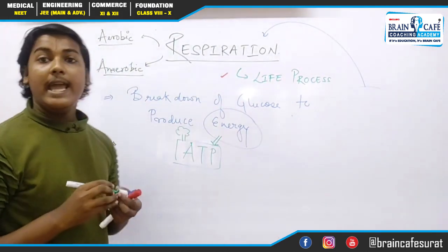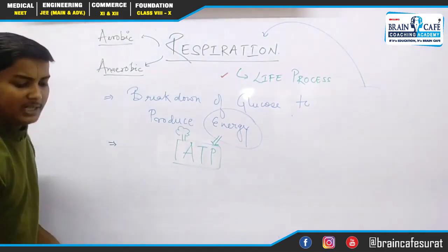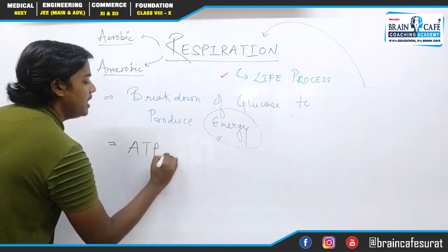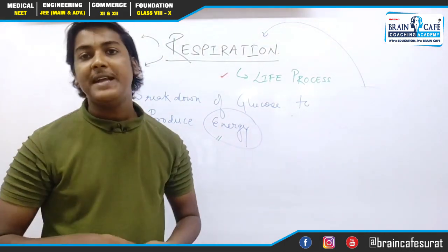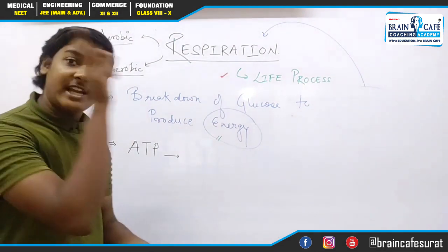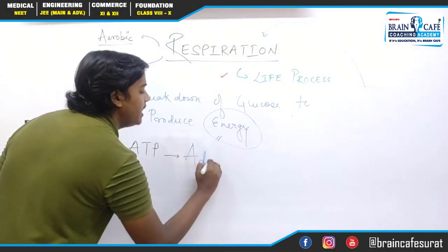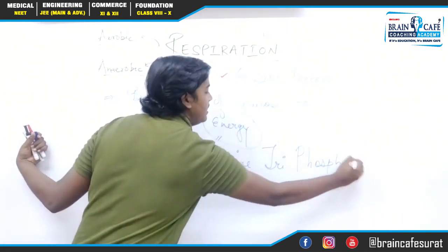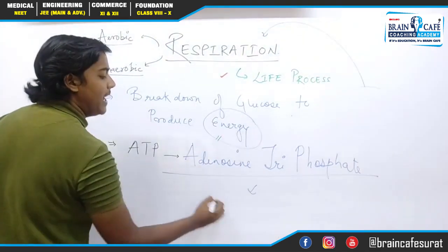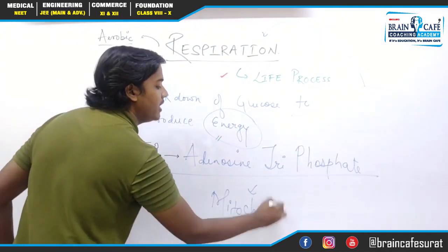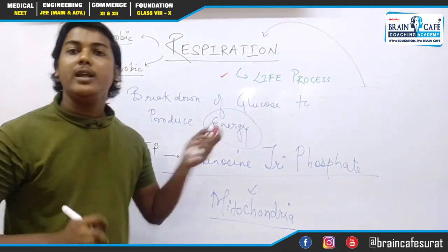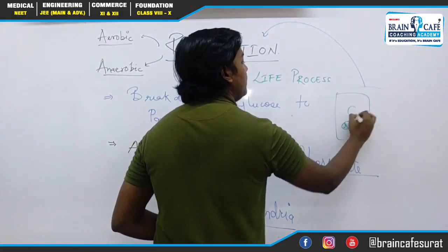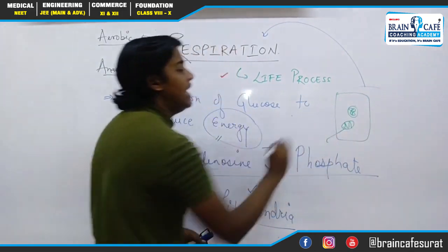Everyone should know what ATP is. A very fundamental understanding is needed about ATP. ATP — the full form everyone should know, especially 10th standard students. ATP is Adenosine Triphosphate. And this ATP is majorly produced by the powerhouse of the cell, called the mitochondria. So in a cell, the mitochondria produces ATP.